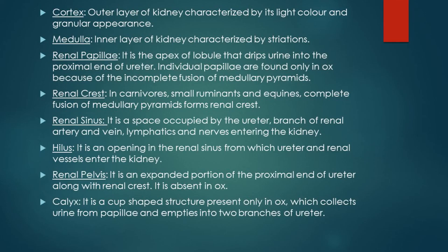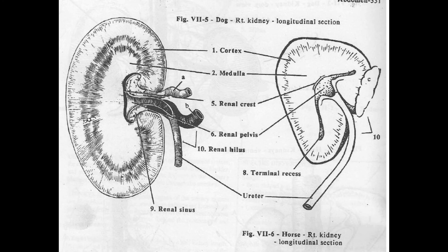Then comes the renal sinus. The renal sinus is a space occupied by the ureter, branches of renal artery and vein, lymphatics, and nerves that enter the kidney. Then comes the hilum, which is an opening in the renal sinus through which the ureter and renal vessels enter the kidney. Next is the renal pelvis, which is an expanded portion of the proximal end of the ureter along with the renal crest. The renal pelvis is absent in ox, because instead of a renal crest, the ox contains a calyx.